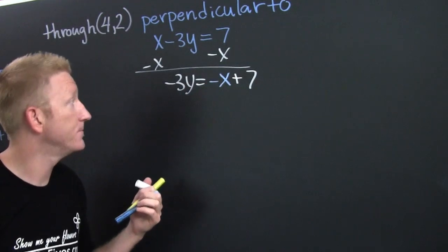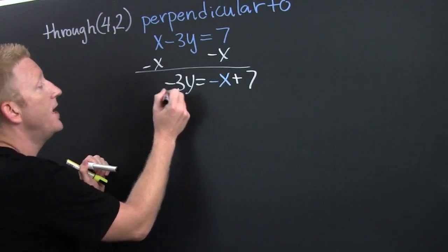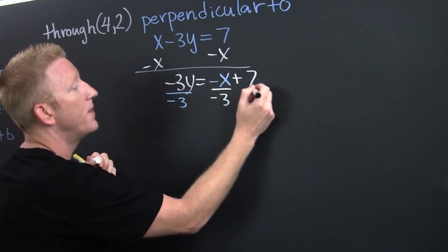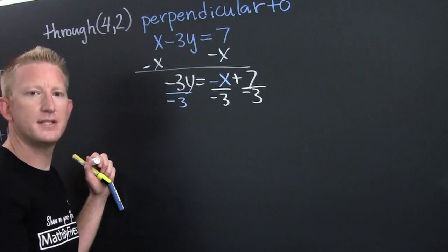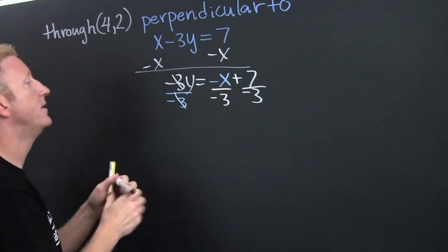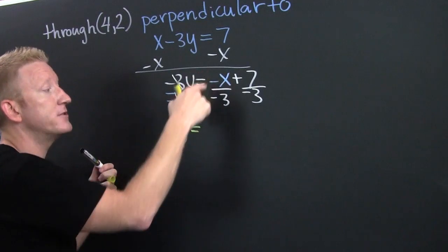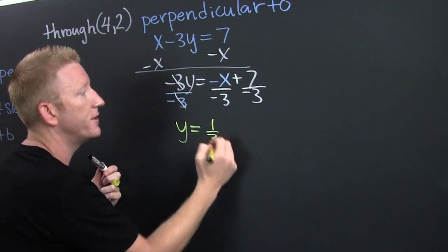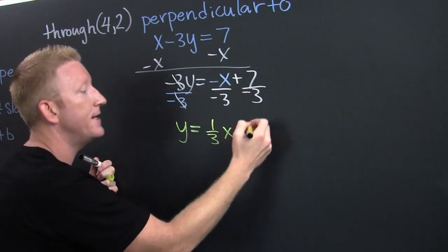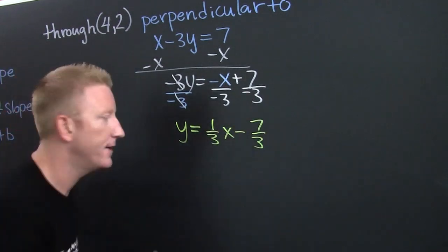Now we need to get rid of that minus three in front of the y, so we're going to divide both sides by negative three. Dividing this side by negative three and equivalently dividing the other side by negative three — on the left side I'm left with y by itself. Negative over negative is positive, so that gives me one-third x, and then plus negative is minus seven-thirds. I don't care about that — I'm looking for the slope, which is one-third.